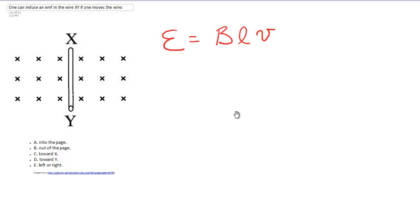In order to induce an EMF across a conductor, two things have to be true. The conductor has to be in motion, and it has to be moving so that at least a component of its motion is cutting across field lines.